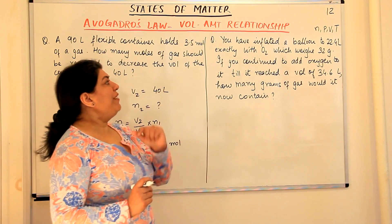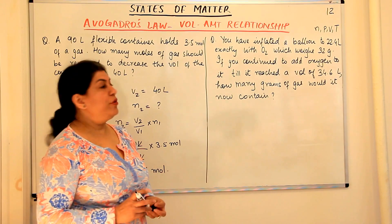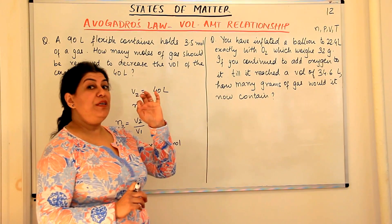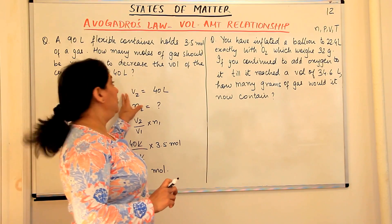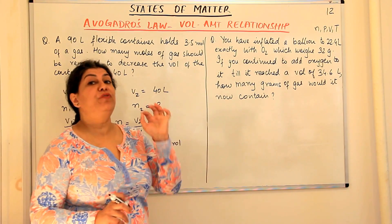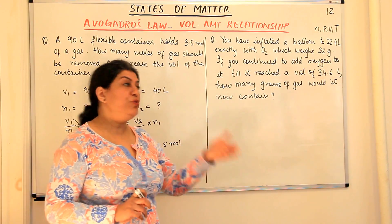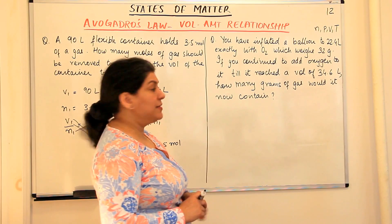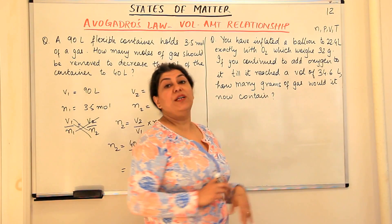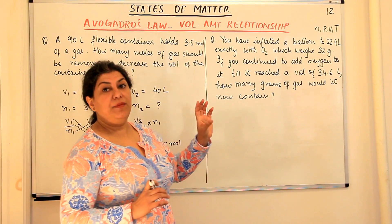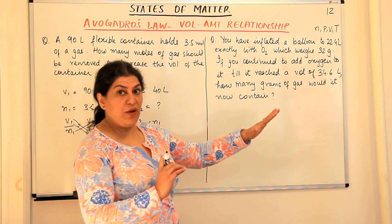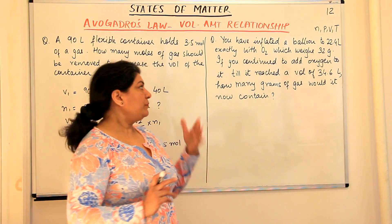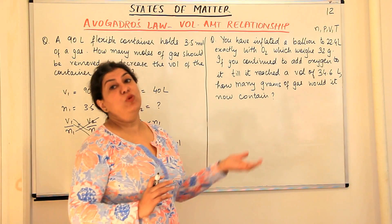The last question: You have inflated a balloon to 22.4 liters exactly with oxygen, which weighs 32 grams. We've been given grams now, but the relationship uses number of moles (N), so we'll have to convert grams into moles. If you continue to add oxygen until it reaches a volume of 34.6 liters (V₂), how many grams of gas would it now contain? We must first find N₂ and then convert moles back to grams.